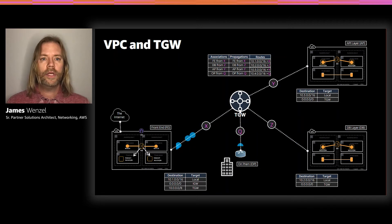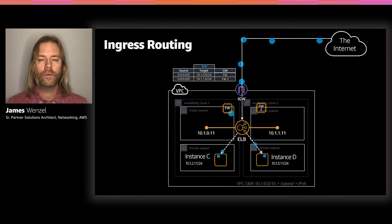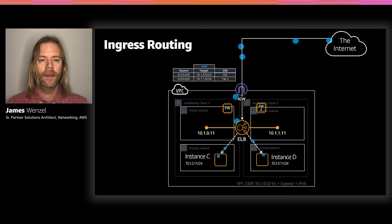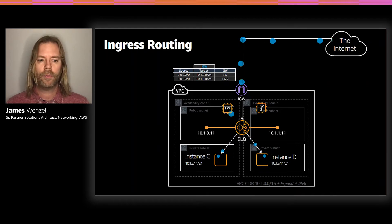Another thing introduced last year was ingress routing. Ingress routing captures packets as they come in from the internet and directs them based on their destination. In this example, let's say we have two firewalls purchased from the marketplace as AMIs, placed to secure our workload. Sometimes firewalls are needed over something like an NACL or a security group because they simply have more features or they have reporting — there are many reasons why we'd want a firewall.